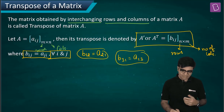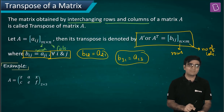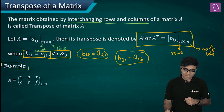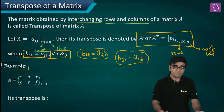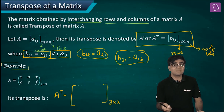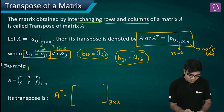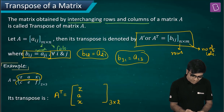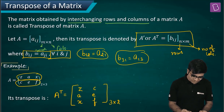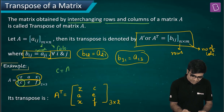For example, bij equals aji: b12 becomes a21, and b31 becomes a13. Let's say matrix A has first row z, a, x and second row c, e, f — a two by three matrix. Since the order of A is two by three, the order of A transpose will immediately become three by two.